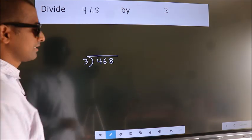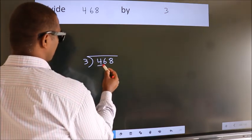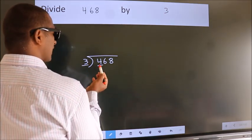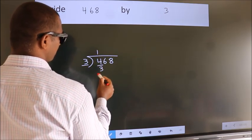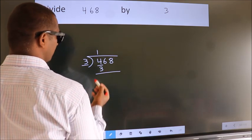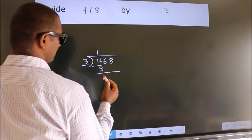Next, here we have 4, here 3. A number close to 4 in 3 table is 3 once 3. Now, we should subtract. We get 1.